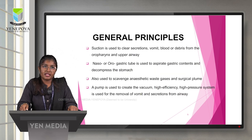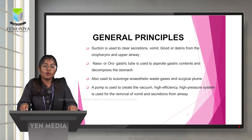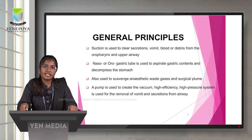General principles: suction is used to clear secretions, vomit, blood, or debris from the oropharynx and upper airway. Naso- or orogastric tubes are used to aspirate gastric contents and decompress the stomach. Suction is also used to scavenge anesthetic waste gases and surgical plume.